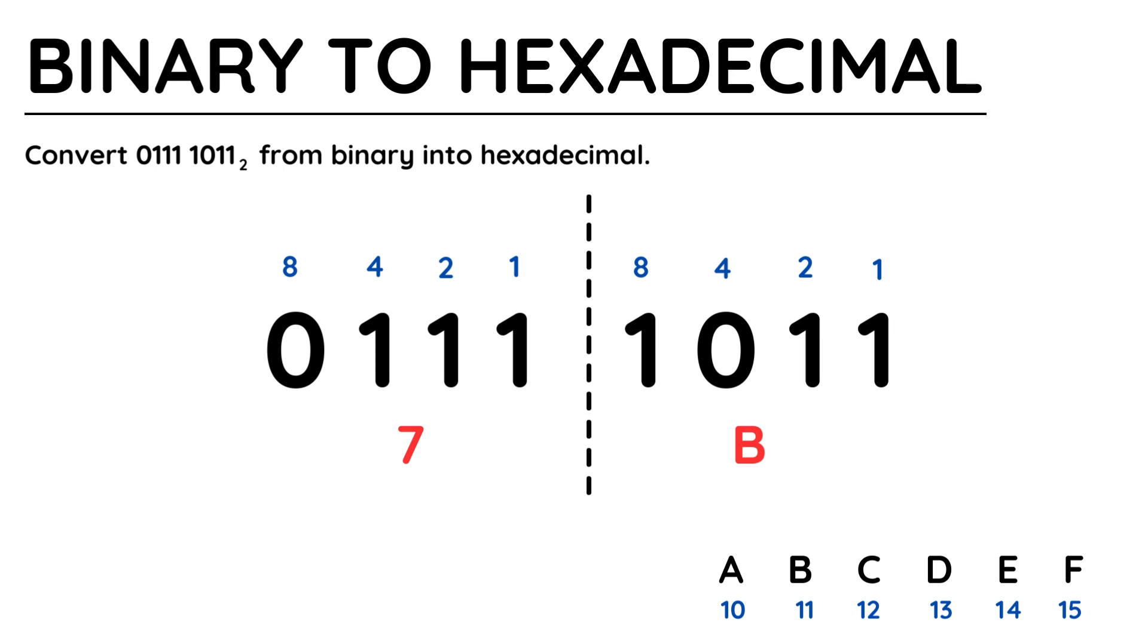Remember, hexadecimal doesn't use double digit numbers, so looking at our conversions in the bottom right, we convert 11 into B.